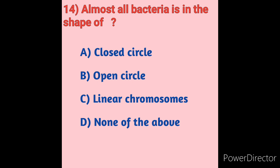Question 14: Almost all bacteria have chromosomes in which shape? Option A: Closed circle, Option B: Open circle, Option C: Linear chromosomes, Option D: None of the above. Most bacteria have a haploid genome — a single chromosome consisting of a circular double-stranded DNA molecule. Some bacteria are round, some are rod-shaped, and some have unusual shapes, but the most common bacterial chromosome shape is a closed circle. Option A — closed circle — is the correct answer.